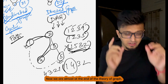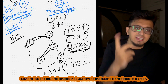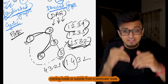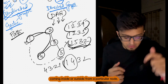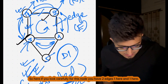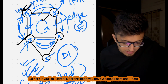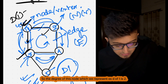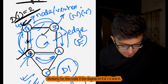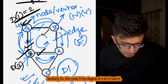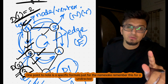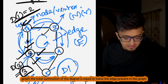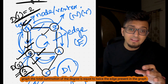Now the last and final concept is the degree of a graph. The degree of a graph means the number of edges that are coming into or going out from a particular node. For this node you have two edges, so the degree of node one — written as d(1) — is two. For node three, the degree is three since there are three edges. A specific formula to remember: for an undirected graph, the total summation of degrees is equal to twice the number of edges — summation of degree = 2E.